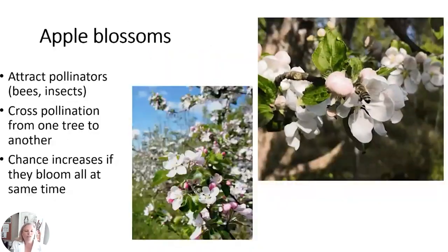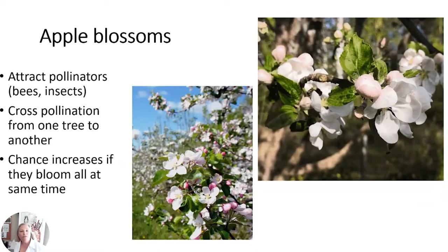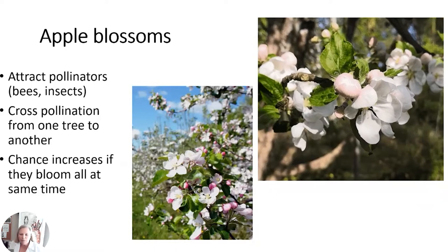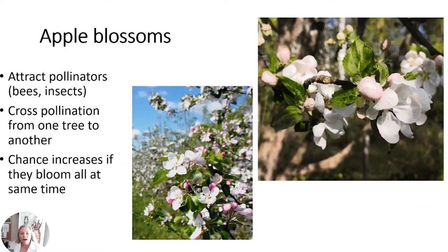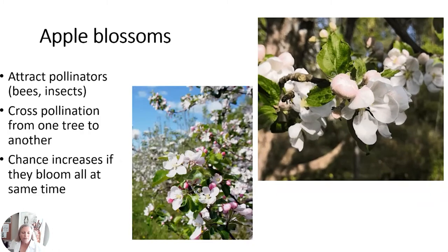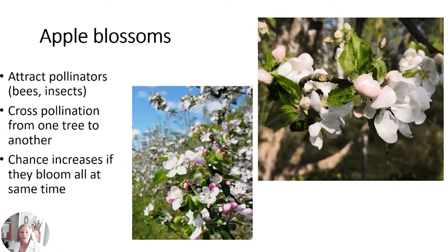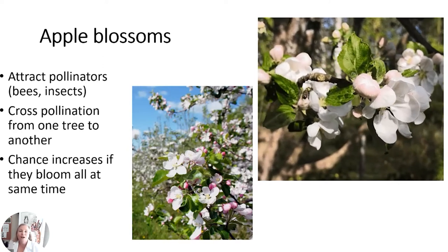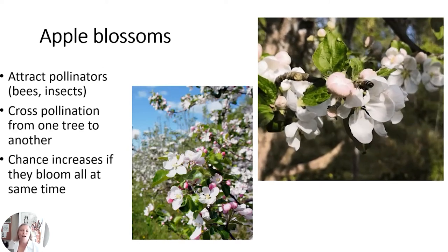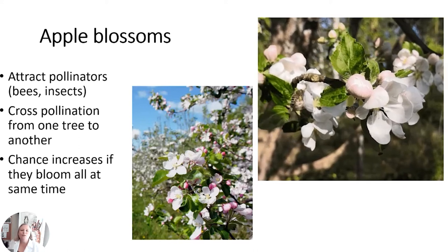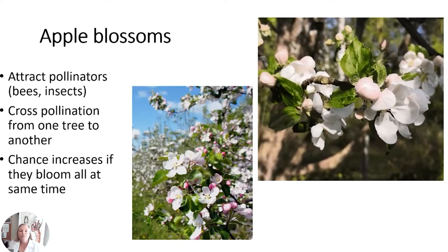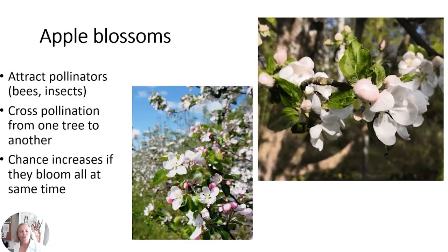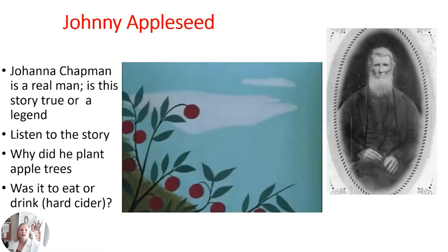Before you get the apple, you have the apple blossoms. These apple blossoms have five petals, and the middle yellow parts are the stamens and sepals, made to attract bugs — pollinators like bees, insects, and hummingbirds. As they move from flower to flower they carry the pollen around, and that's what turns into an apple.